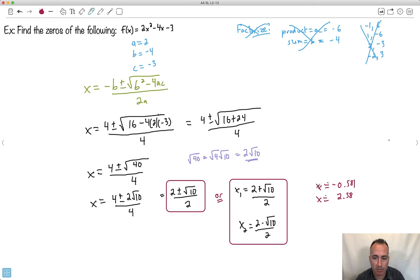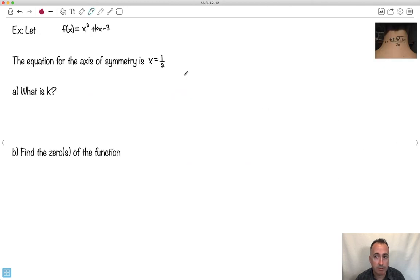Let's do another one. Here we have x squared plus kx minus 3, and they tell us the equation for the axis of symmetry is x = 1/2. What's k? Well, it helps to know what the equation is for the axis of symmetry. The axis of symmetry is always given by x equals minus b over 2a. That's just a fact.